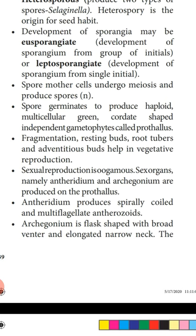Vegetative reproduction is found in pteridophytes. It occurs by fragmentation — breaking into pieces, where each piece develops into a new plant. Resting buds are also produced during unfavorable conditions; they are fully developed buds waiting for suitable conditions to germinate. Root tubers and adventitious buds also help in vegetative reproduction.